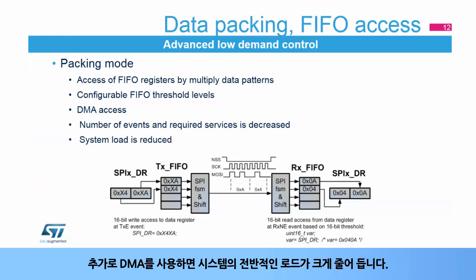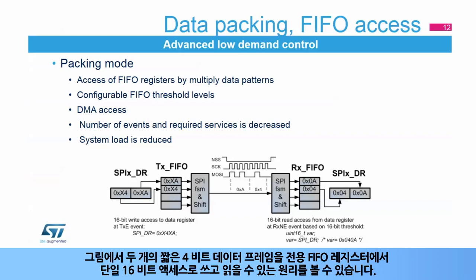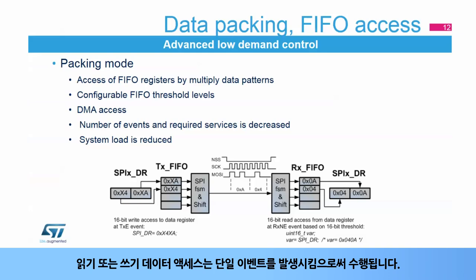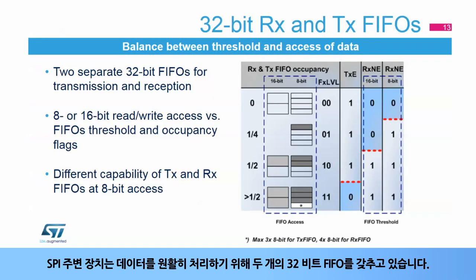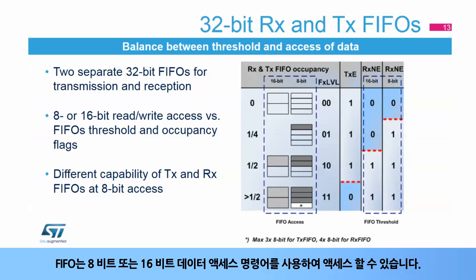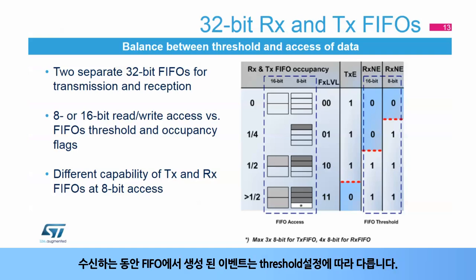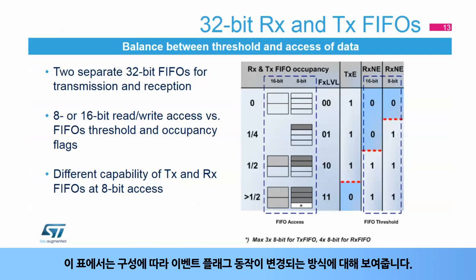When the DMA is used additionally, overall loading on the system is significantly reduced. In the figure shown, you can see the principle of how two short 4-bit data frames can be written and read by a single 16-bit access in the dedicated FIFO registers. The read or write data accesses are performed just by raising a single event. The SPI peripheral features two 32-bit FIFOs to handle the data flow. The FIFOs can be accessed by using either 8-bit or 16-bit data access instructions. During reception, the events generated from the FIFO depend on the threshold setting. This table gives an overview of how the event flag behavior changes depending on the configuration.